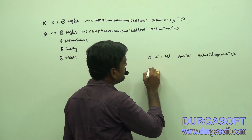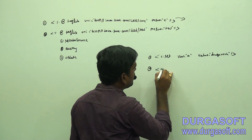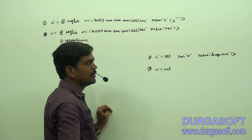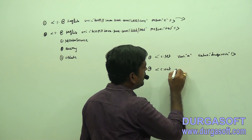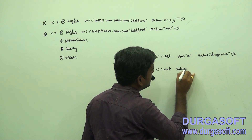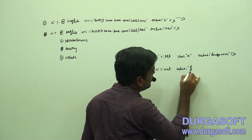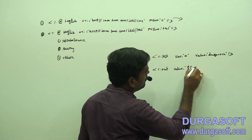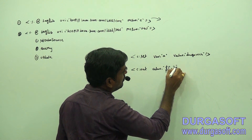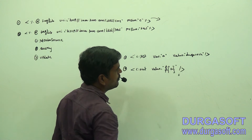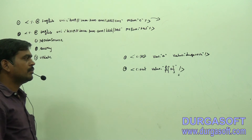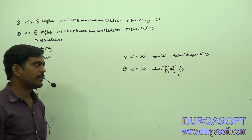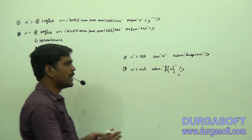For example if you want to display that value, then c:out, value is equal to dollar of a. Then we can print this, displayed on the browser. So without using Java code we can set the values and we can retrieve the values.